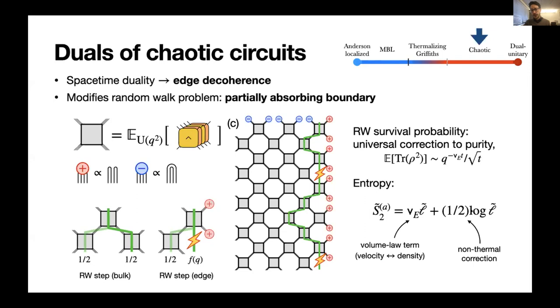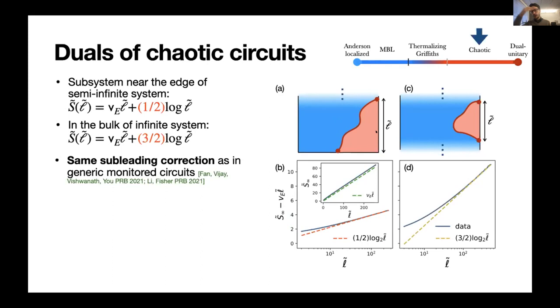And here you can see there is a factor of one half, but this is due to the fact that we're taking a subsystem that's near the edge of a semi-infinite chain. If we took a system in the bulk of an infinite chain, we would find different boundary conditions for this random walk would give us this three-halves correction, which is indeed the same as is being conjectured to arise in generic unitary measurement circuits in the volume law phase.